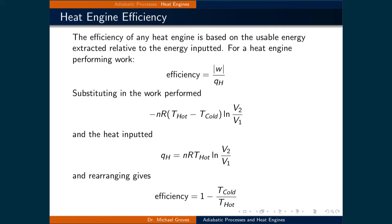Dividing the absolute value of the work by the heat inputted results in T_hot minus T_cold over T_hot. And therefore rearranging this gives an efficiency value which is equal to 1 minus T_cold divided by T_hot.